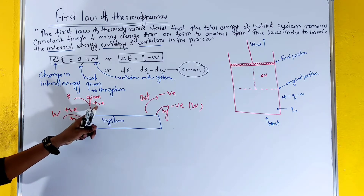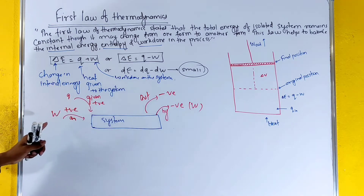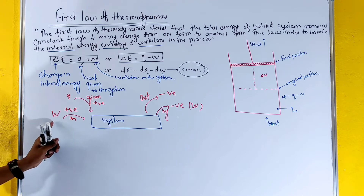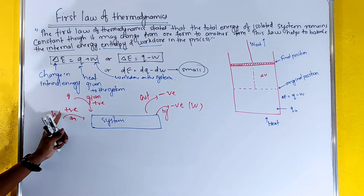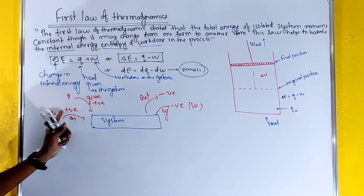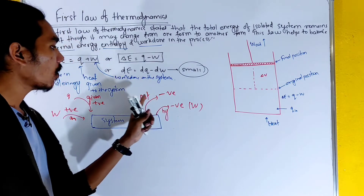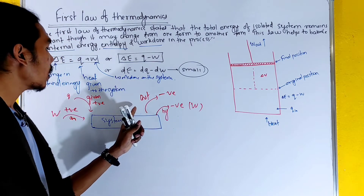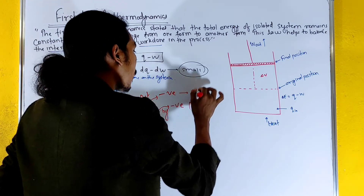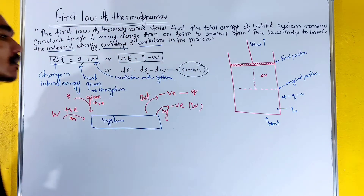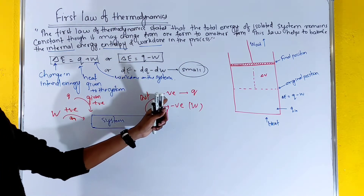Work done on the system has a positive value; work done by the system has a negative value. Heat released by the system also has a negative value.